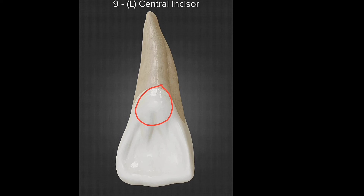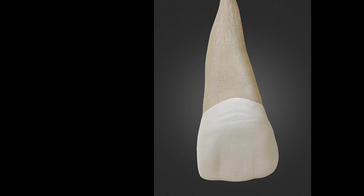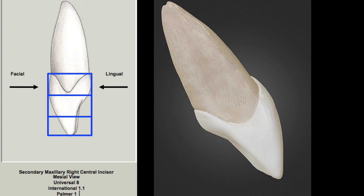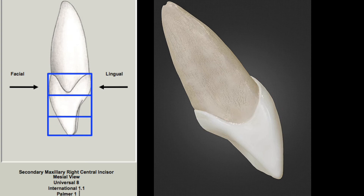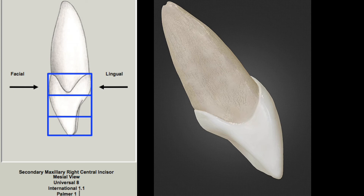Now let's see the medial aspect. The shape resembles a triangle or wedge shape. The cervical line is curved incisally. The labial outline is slightly convex. The lingual outline is convex at the cingulum, concave at the marginal ridge, and slightly convex again at the incisal edge.